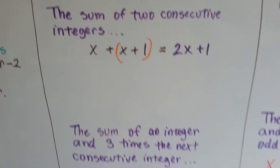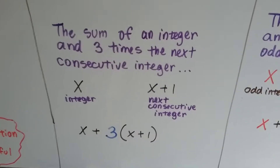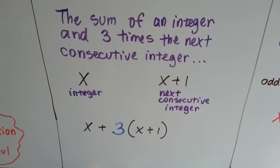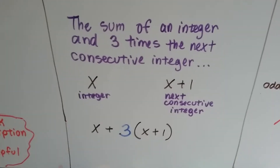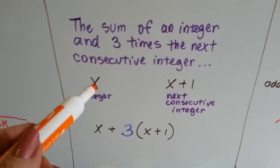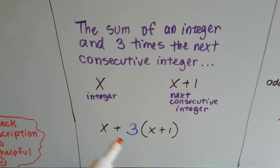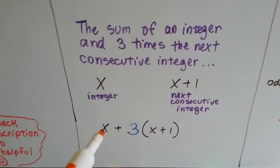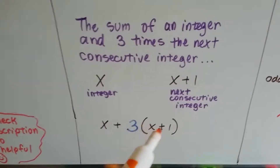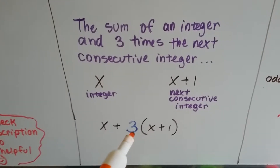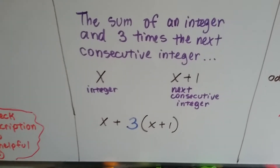If it said the sum of an integer and three times the next consecutive integer — there's the integer, and that's the next consecutive integer. So the sum of that integer and three times the next consecutive one would be x plus 3 times the quantity x plus 1.